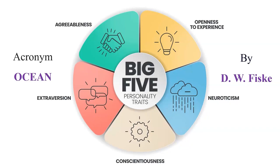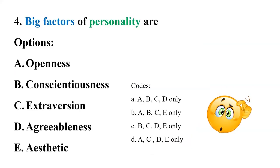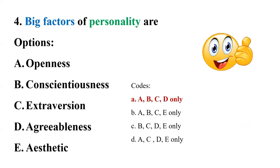Coming back to the question: we eliminate option E — aesthetic — since it is not one of the Big Five. The correct answer is code A: capital A, B, C, D only.